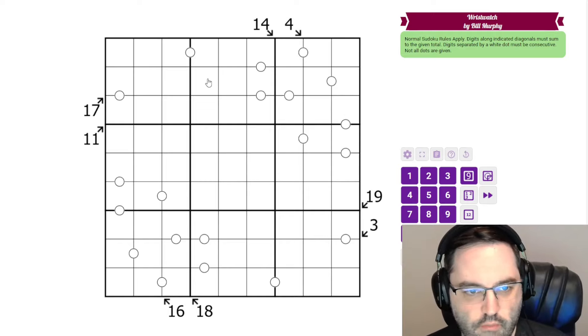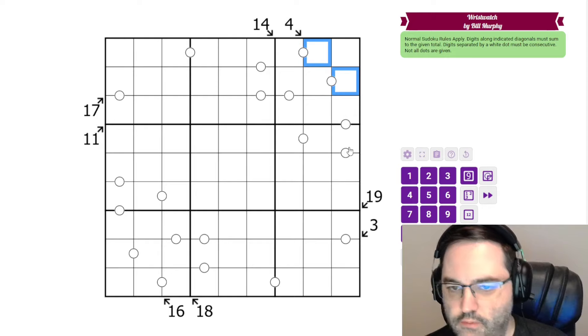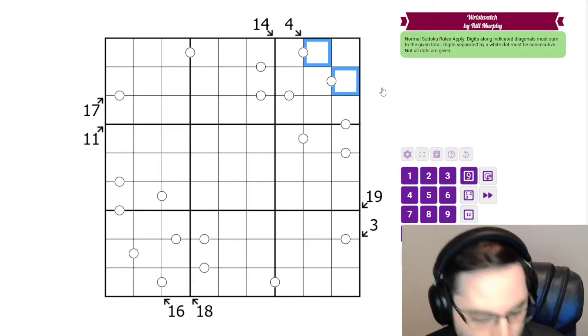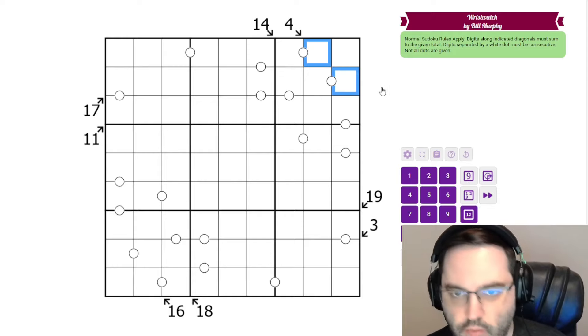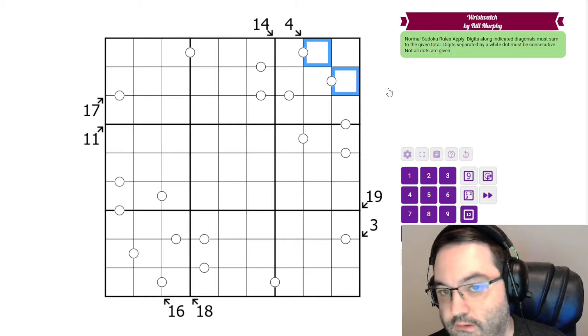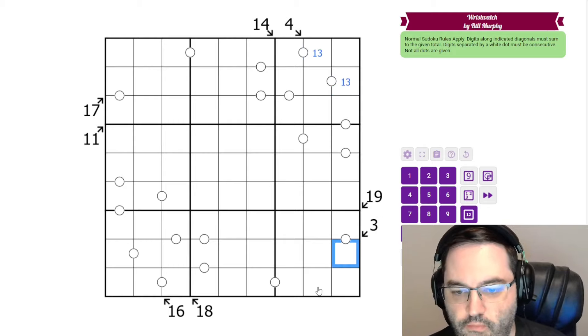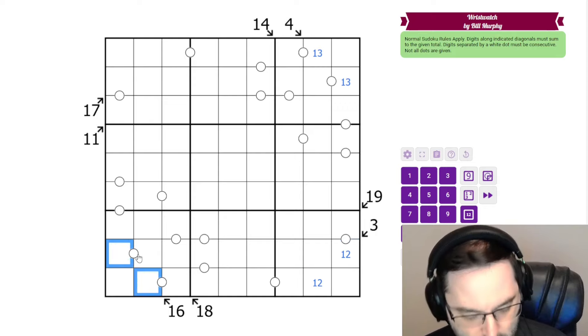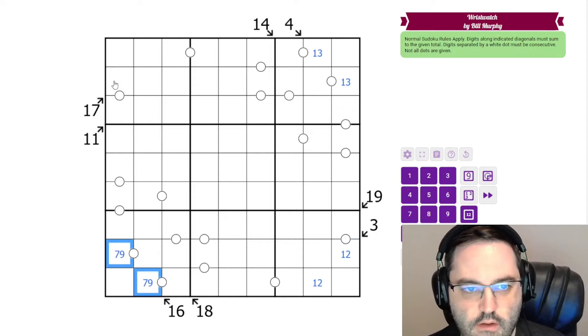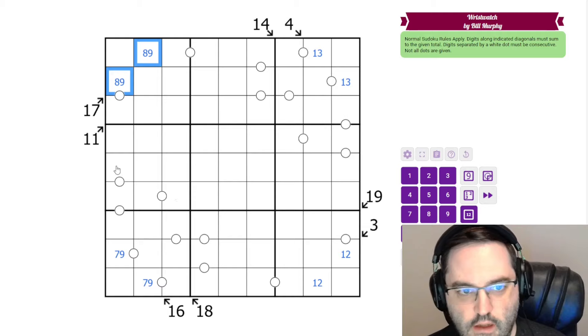Those are the rules, and we're going to start with our short ones because these are all forced. The only way to make 4 in 2 cells that see each other is 1, 3. The only way to make 3 is 1, 2. The only way to make 16 is 7, 9. And the only way to make 17 is 8, 9. So those are all forced.